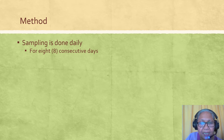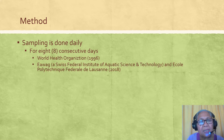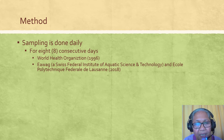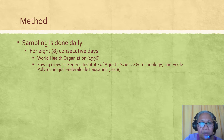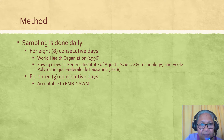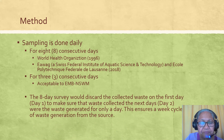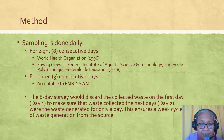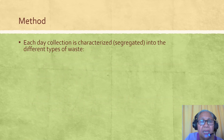Sampling is done daily, usually for eight consecutive days, based on the method by the World Health Organization and EAWAG — the Swiss Federal Institute of Aquatic Science and Technology — and École Polytechnique Fédérale de Lausanne. They recommend eight consecutive days, while three consecutive days is acceptable to the Environmental Management Bureau of the National Solid Waste Management Commission. In the eight-day survey, the waste collected on day one is discarded to ensure that only waste generated on a single day is measured, ensuring a full weekly cycle of waste generation from the source.